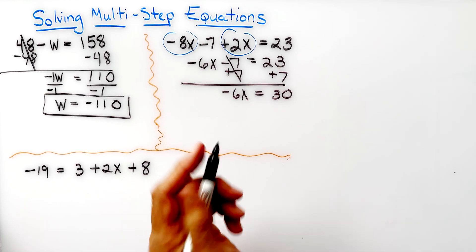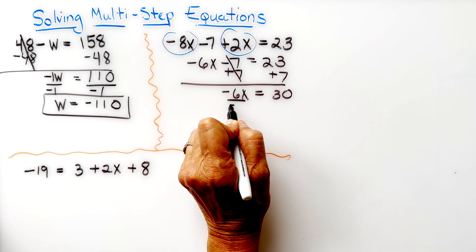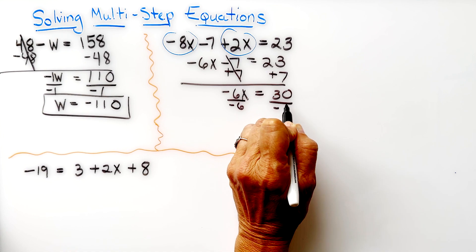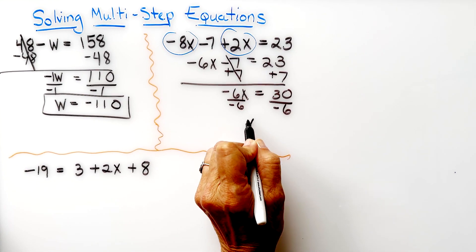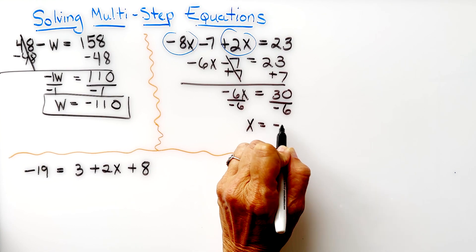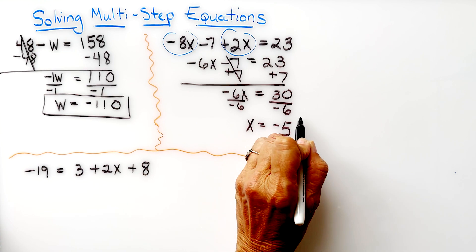Last step is to get the variable by itself. We're dividing both sides by negative 6, so x equals negative 5. That's our answer.